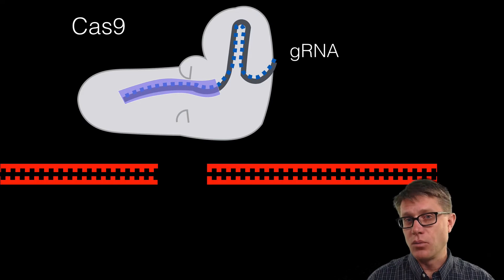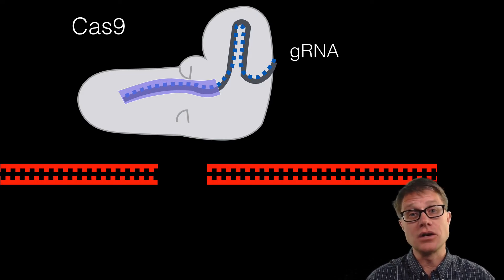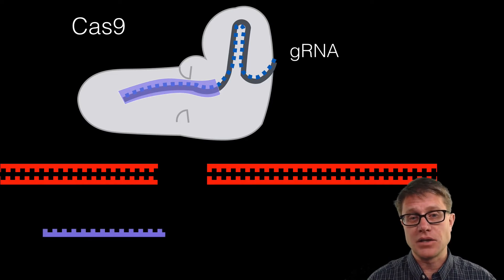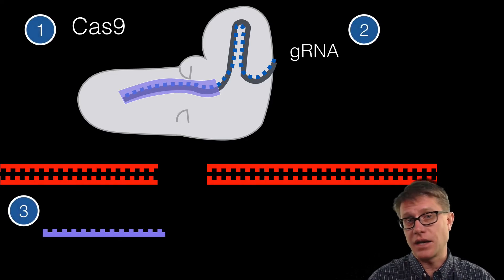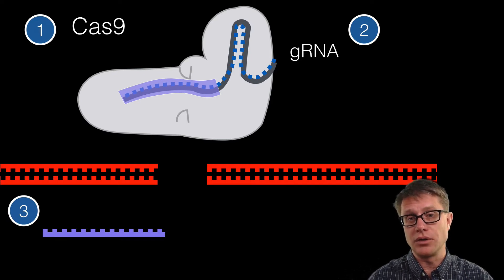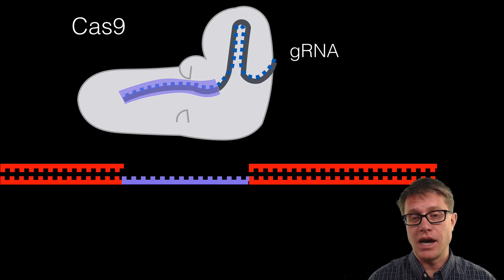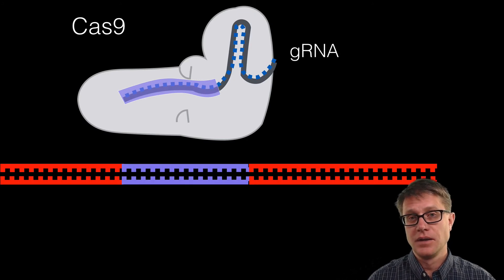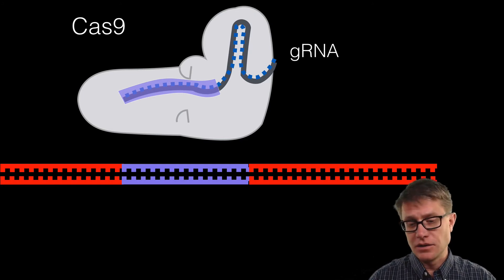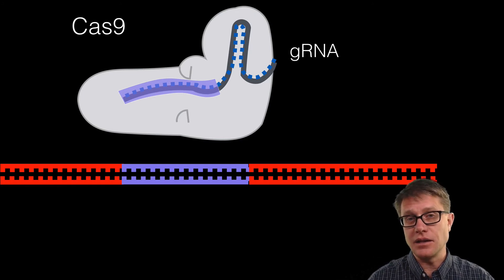Now let us make this more complex — not only do we want to break a gene, but say we want to insert a new gene. Now the system has three parts: the Cas9, the guide RNA, and the donor DNA that we want to put in. As we break the DNA, the donor DNA is added and the cell fixes it, so we have essentially added the gene to the cell. What is cool about the CRISPR-Cas9 system is it does this in living cells and it can cut the DNA in multiple different places.